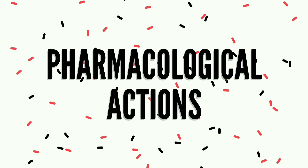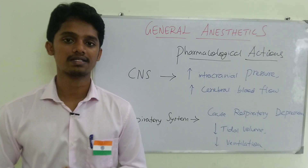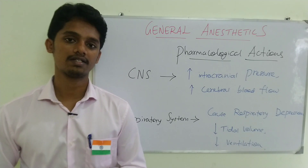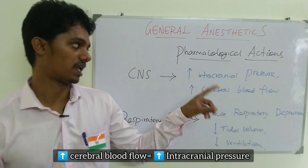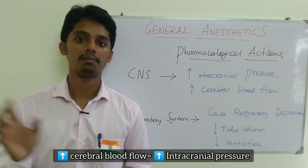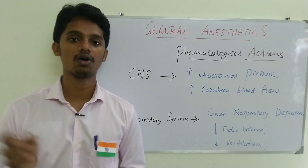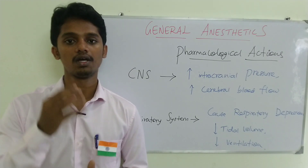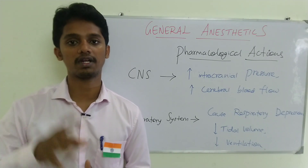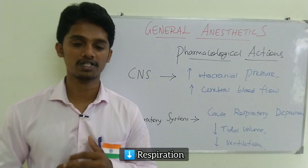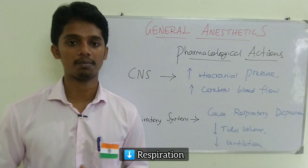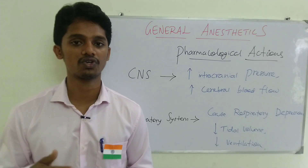Some drugs act on the NMDA receptor instead. For pharmacological actions, the main action is on the CNS, producing general anesthesia. Additionally, cerebral blood flow increases, leading to increased intracranial pressure — the pressure inside the cranium rises. For the respiratory system, respiration is depressed: the urge to breathe is reduced, tidal volume is reduced, and ventilation is reduced.